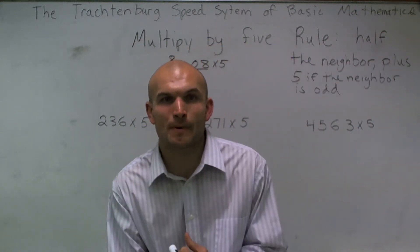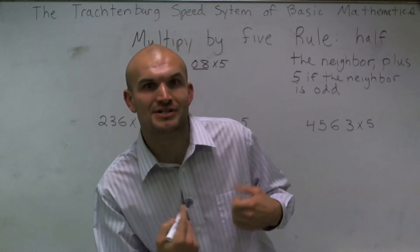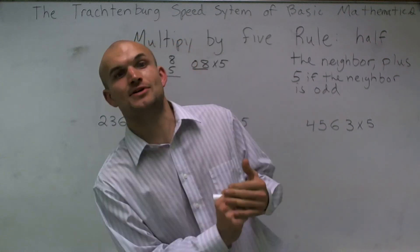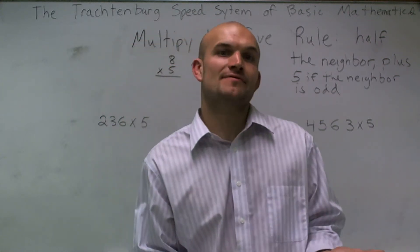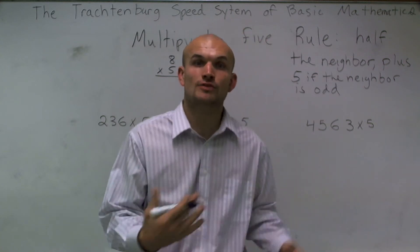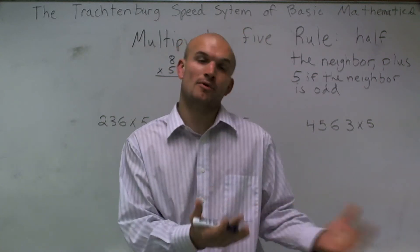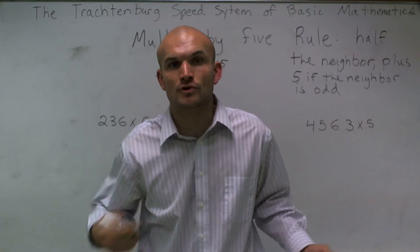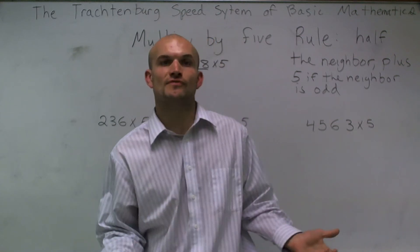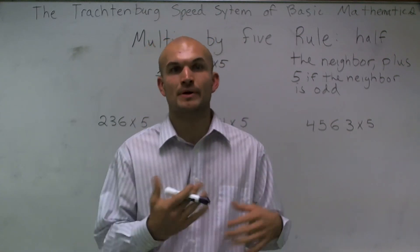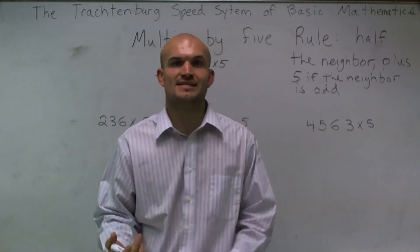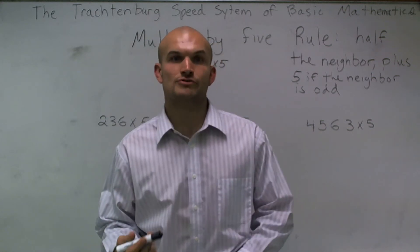Welcome everybody to our steps for multiplying by 5 in the Trachtenberg Speed System of Basic Mathematics. So multiplying by 5, very similar to all the rest of the rules or all the rest of the numbers, is going to have a set of rules that we're going to have to follow.